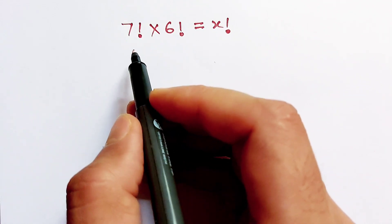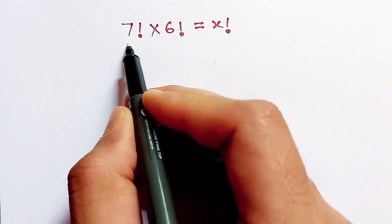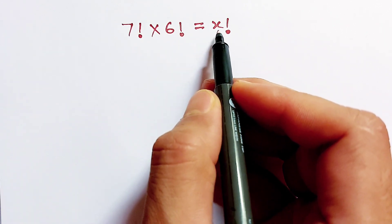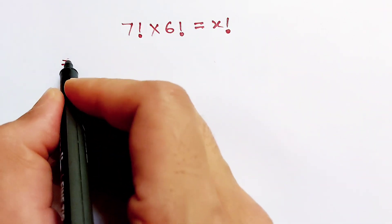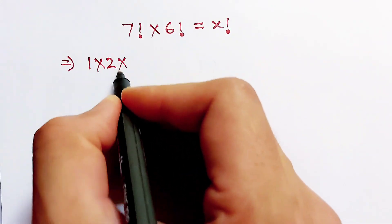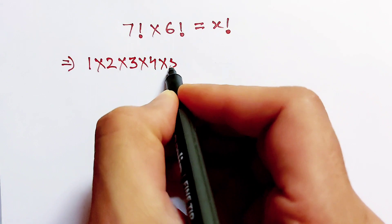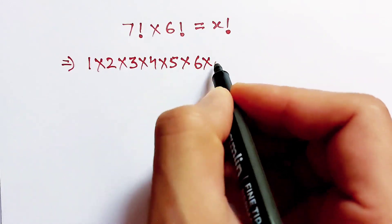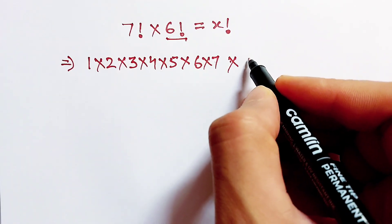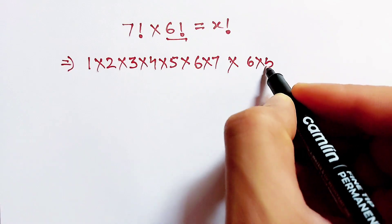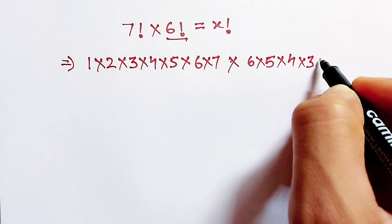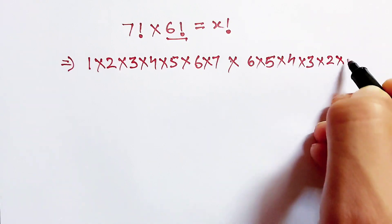Hello friends, question: 7 factorial × 6 factorial = x factorial. We have to find the value of x. We can write 7 factorial as 1×2×3×4×5×6×7, and 6 factorial can be written as 6×5×4×3×2×1, equal to x factorial.